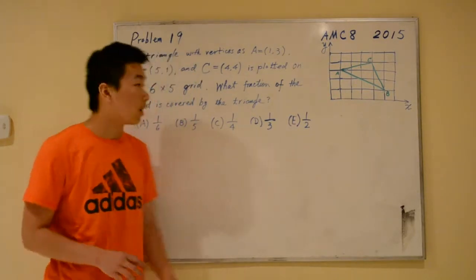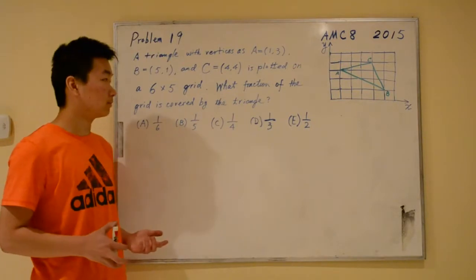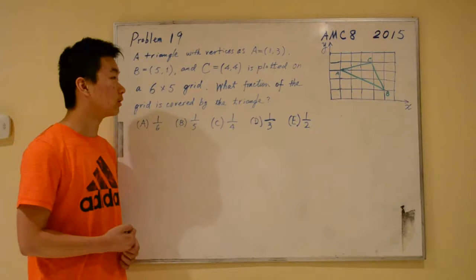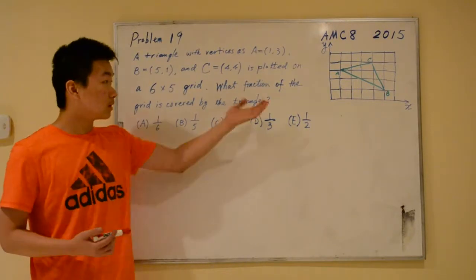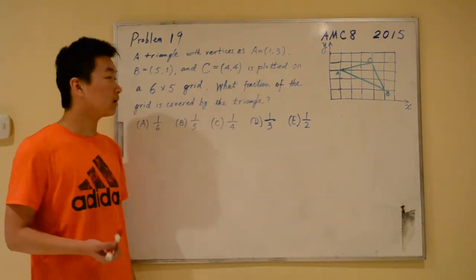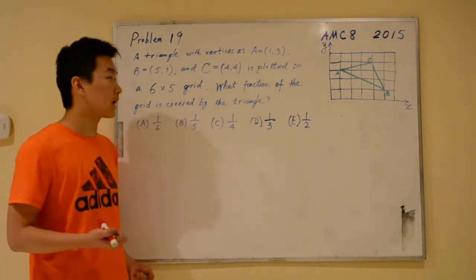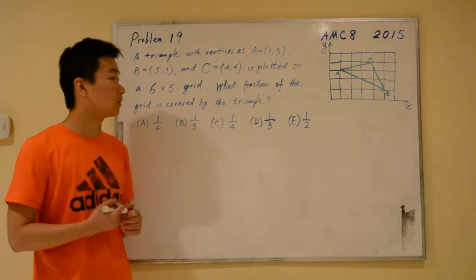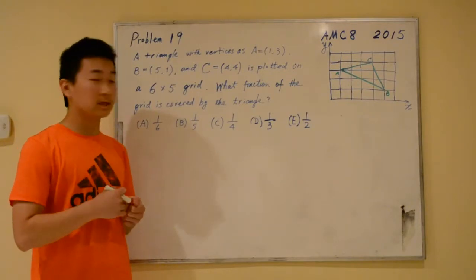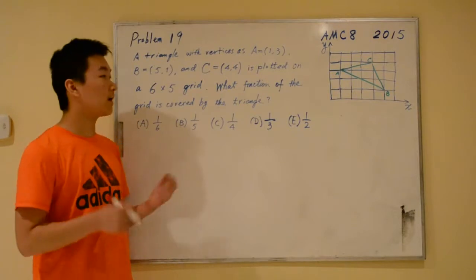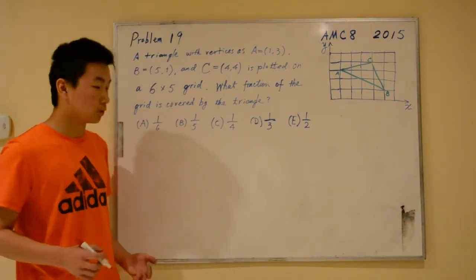For this problem, the main hurdle is to calculate the area of the triangle. This is not a very regular triangle, so using the regular base times height over 2 is not so easy. An easier way to solve for the area is to divide the grid into easy to find areas.